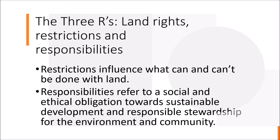We now look at the three R's: land rights, restrictions, and responsibilities. Having already discussed what we mean by land rights — meaning what can you do with the land — we must now introduce its siblings: restrictions and responsibilities. Just as with great power comes great responsibility, the same principle can be applied to land rights. Restrictions influence what can and can't be done with land. Municipalities, for instance, impose zoning restrictions that specify that certain areas are to be used for residential, industrial, commercial, or agricultural purposes. Land owners are therefore restricted to using land for the specified purpose — you can't build a house in an industrial area, just as you can't build a factory in a residential area without permission.